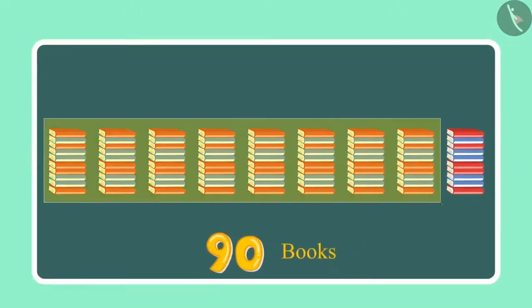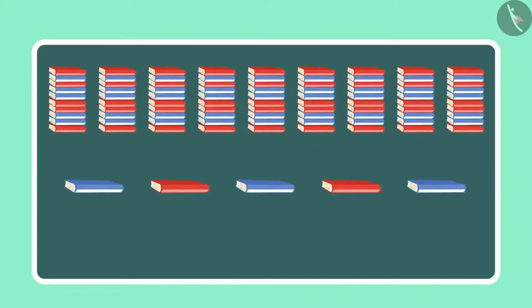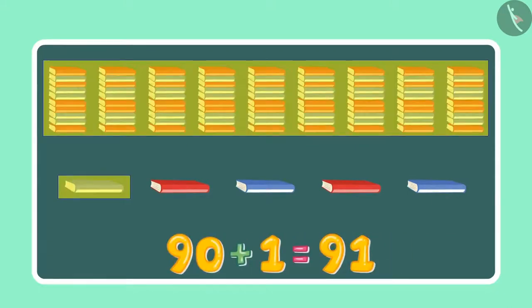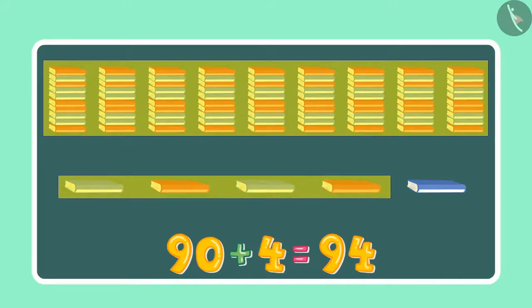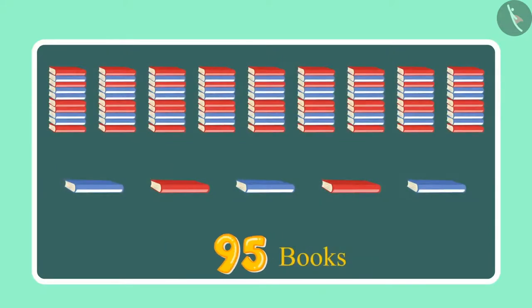Initially, they had 90 books and later they got 5 more books. So, which makes it 91, 92, 93, 94, 95. So, this means they have 95 books in total.